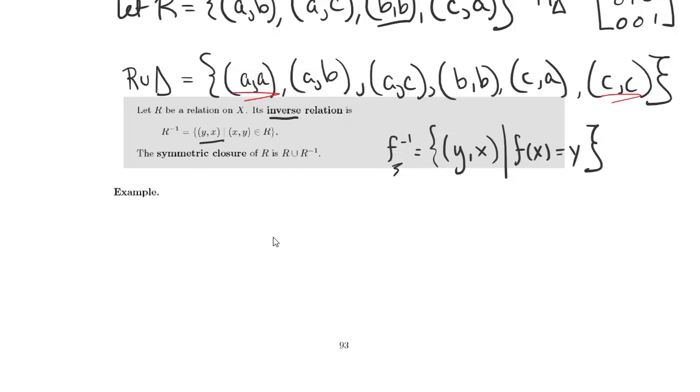So let's let X be ABC again. Let's let R be the relation AB, AC, BB, CA again. This time R inverse is going to be the set BA, CA, BB, and AC.